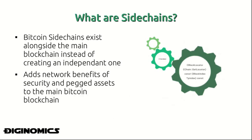Side chains can be understood as blockchains which integrate and exist alongside the main Bitcoin network. Instead of creating an independent standalone blockchain — which alternative cryptocurrencies today use — side chains avoid missing out on the network benefits: the already established security of the Bitcoin network through its hashing power.